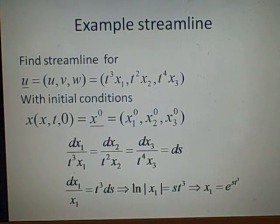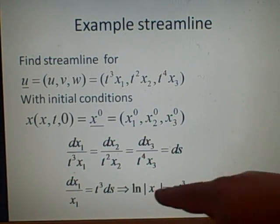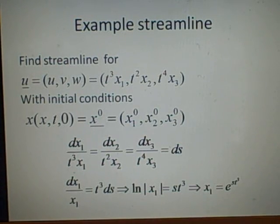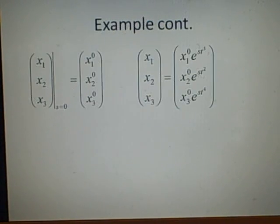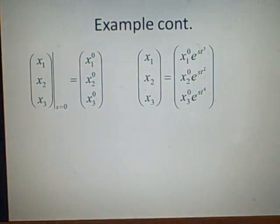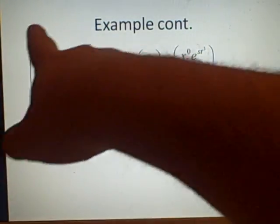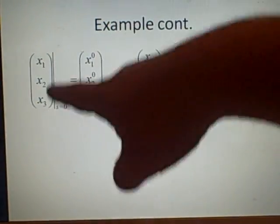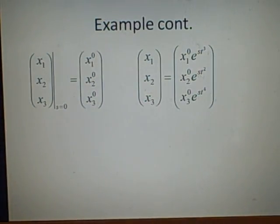Over here we're integrating ds and there is no s in here, so we're just going to multiply by s. Then to find the x₁ we just raise everything to power e because that will cancel the log, so we get x₁ equals e to the power of st³. And that's our x₁. We do the exact same for x₂ and x₃, which should be pretty straightforward, giving these solutions here.